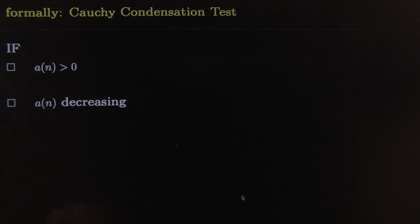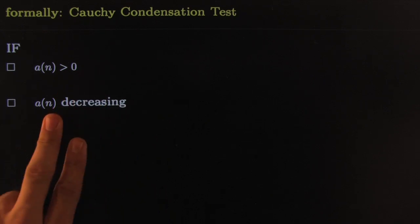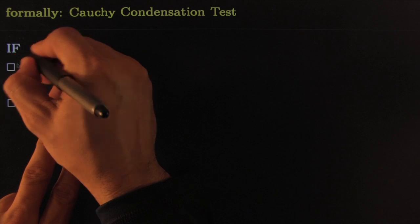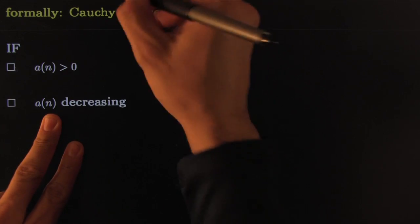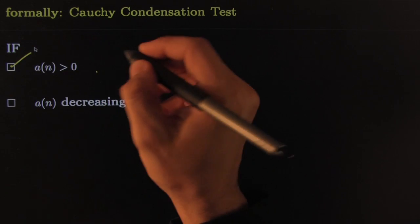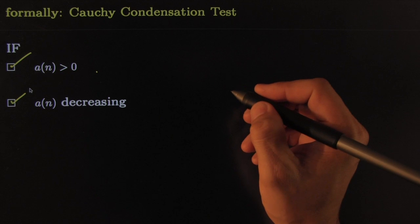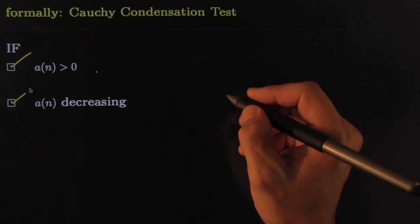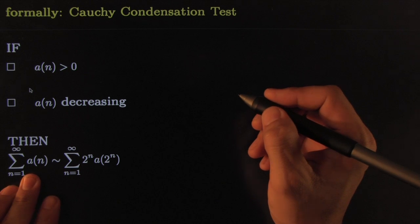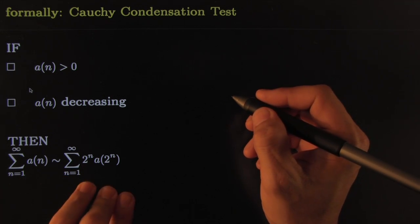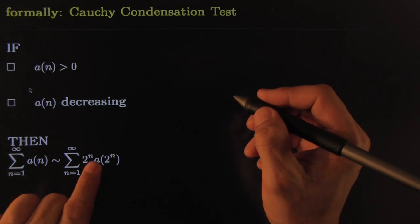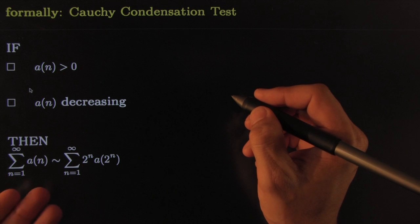So here it is formally, Cauchy's condensation test. If you've got these two conditions - a sequence that's positive and a sequence that's decreasing - you can apply it and be assured that under those conditions the original series behaves just like the condensed version of it right there.